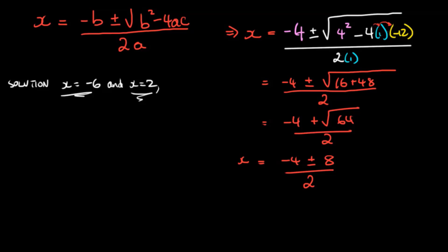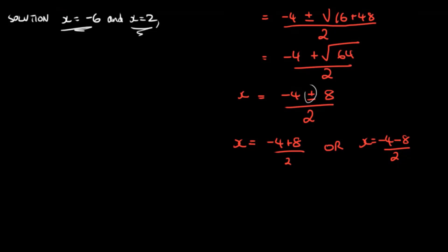Now the plus or minus tells us that we're going to get two answers. Because this is basically saying that x is either going to be equal to negative four plus eight over two, or x is going to be equal to negative four minus eight over two. And in this case, if we were to simplify this, then we would get negative four plus eight is four, and four over two is two.